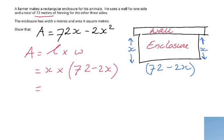Now if I expand that, so I multiply all the terms inside the brackets by x, then I will get 72x minus 2x squared. And look at that, that is what they told me. Show that. And I did show it. 72x minus 2x squared is the area of the enclosure.